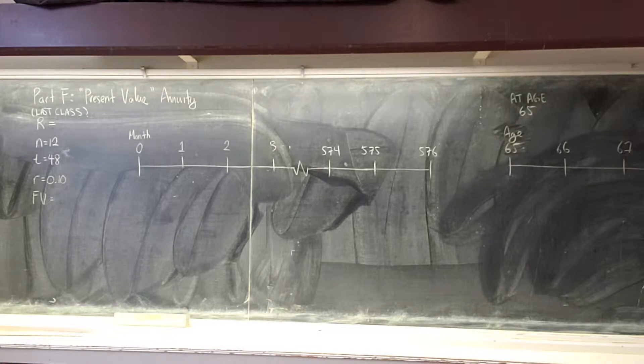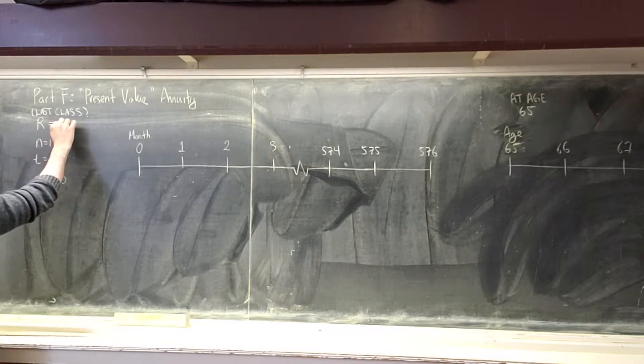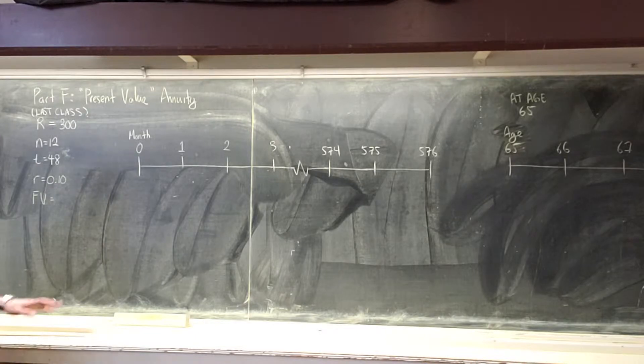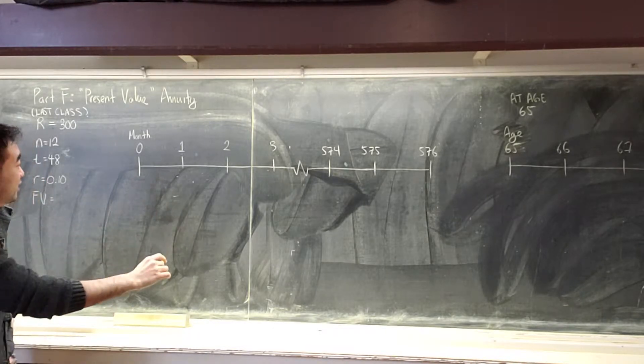The R value, let's pretend we have a ballpark number of $300 a month. Does that sound clear? Everyone needs to take up their calculators. Let's pretend we have $300 a month. And this was what future value meant. I'm trying to see how much I have at the very end.